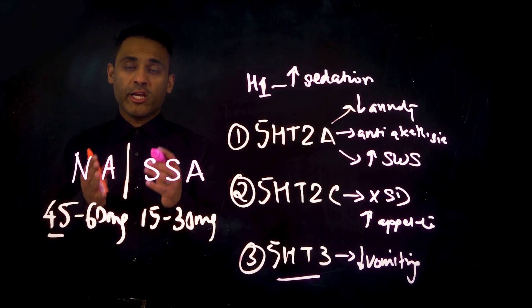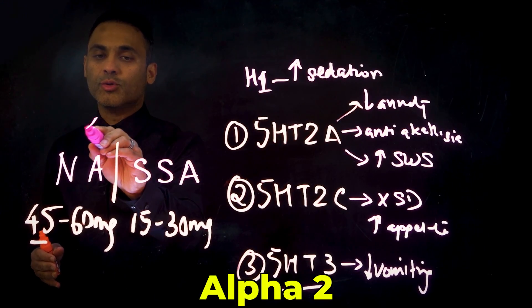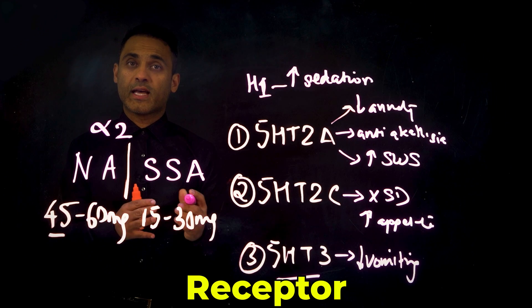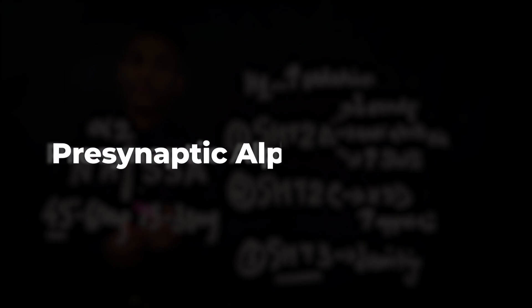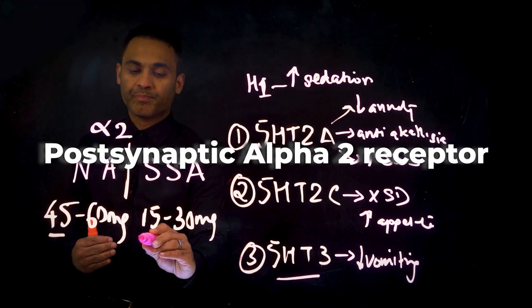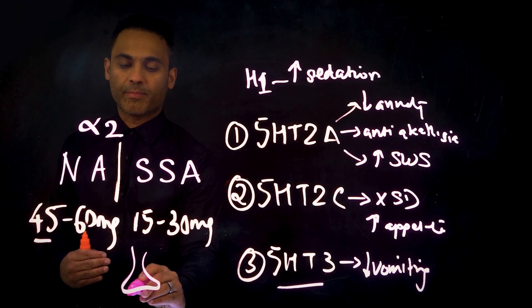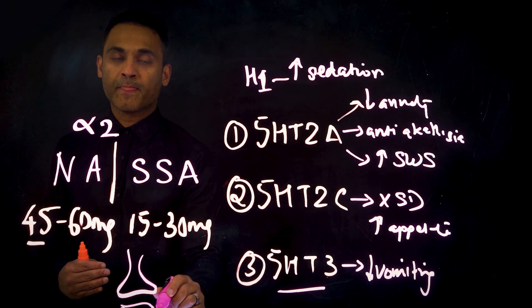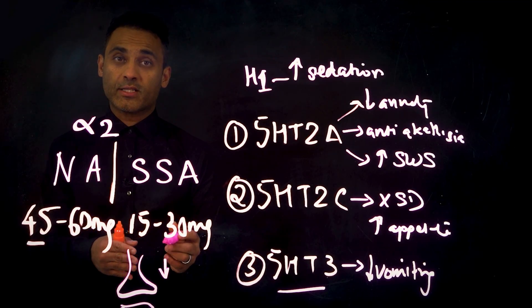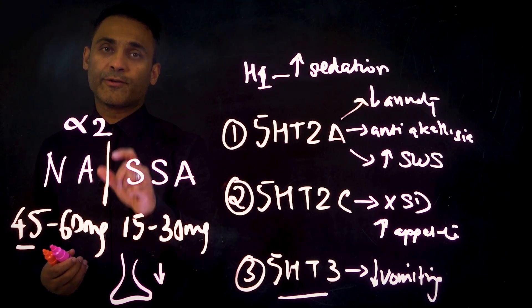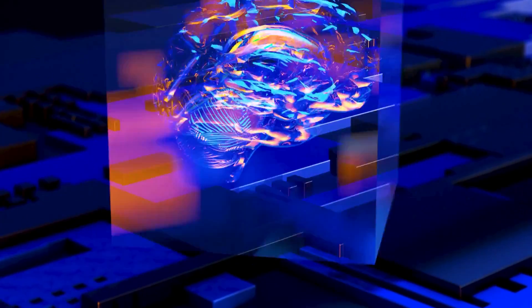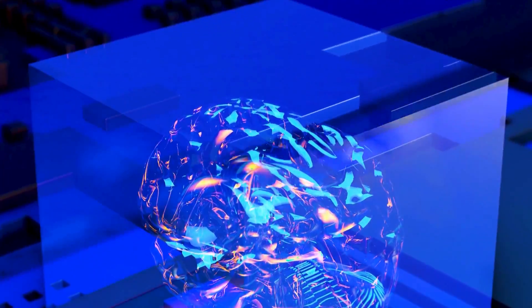Now let's look at the noradrenergic side. And here comes the alpha-2 receptor. We know we have the presynaptic alpha-2 receptor and the postsynaptic alpha-2 receptor. So whenever we're talking about a presynaptic receptor, it will decrease adrenergic activity. In this case, noradrenaline, because alpha-2 receptors are predominantly activated by noradrenaline.